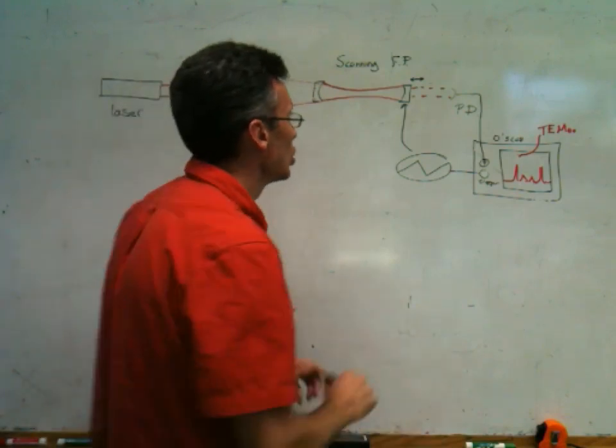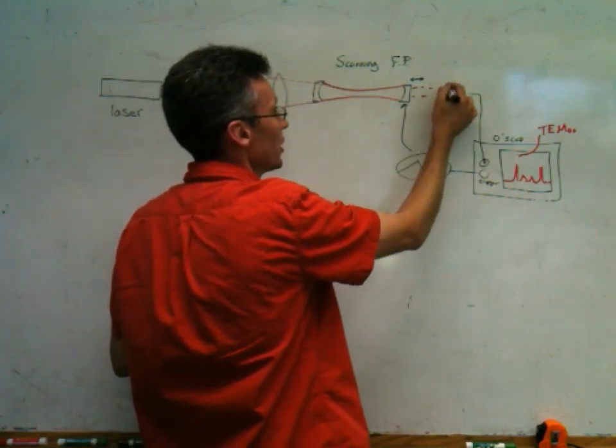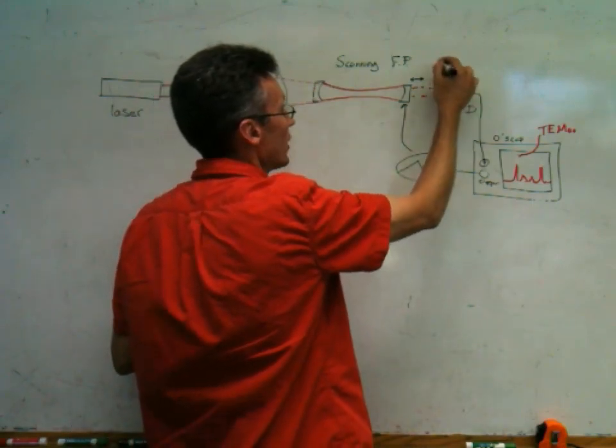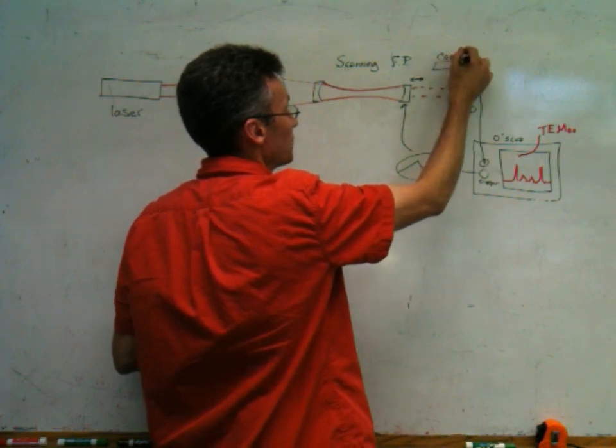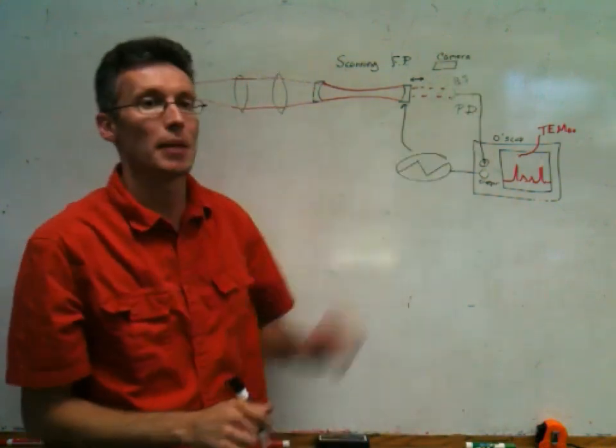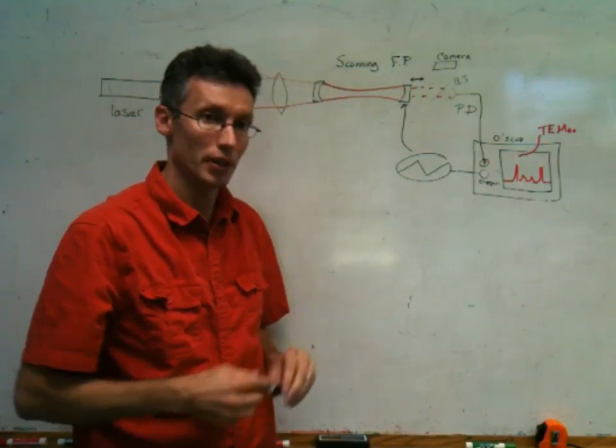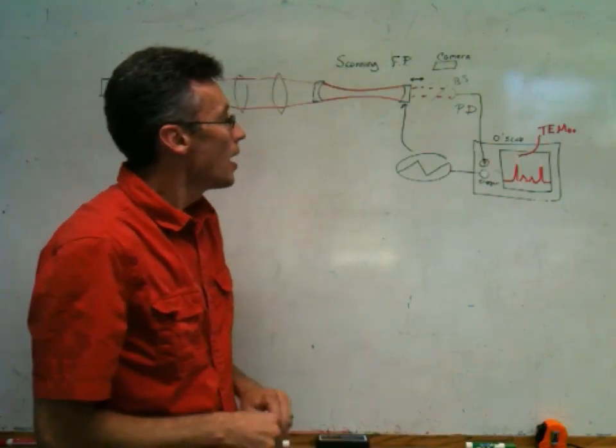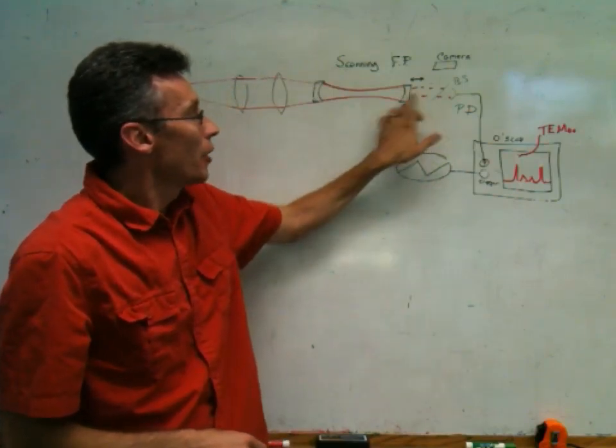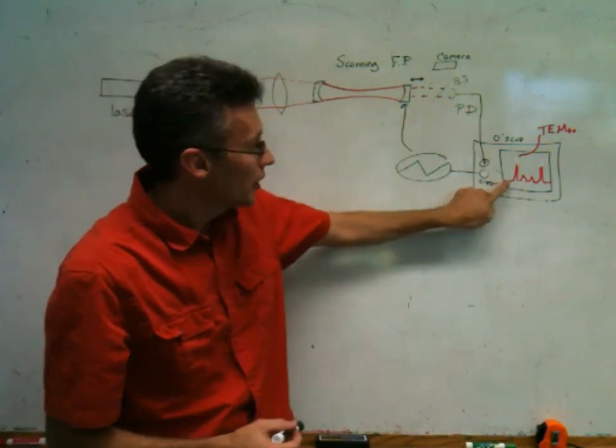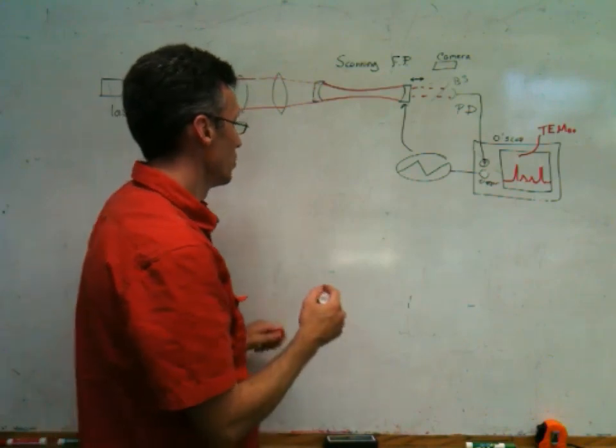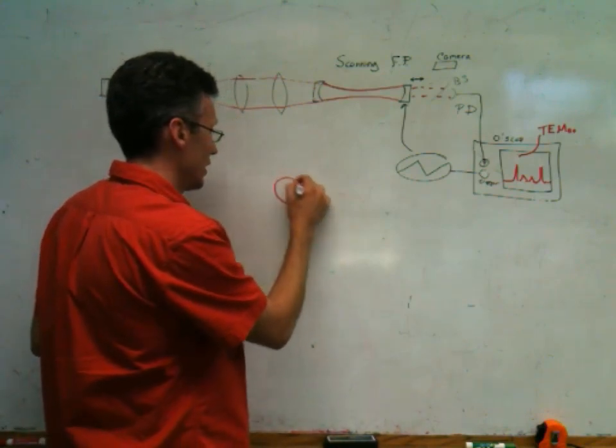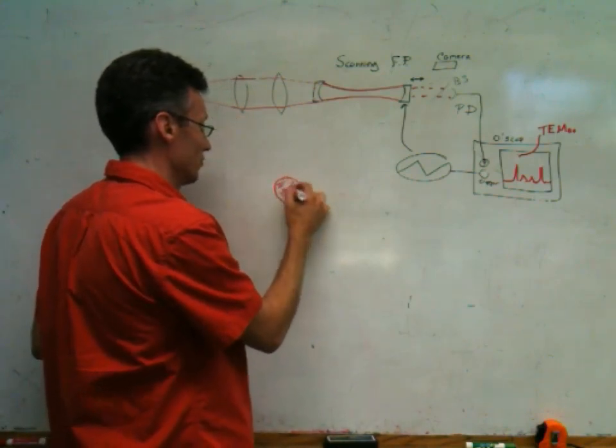You can also look at the light here. You can either put in a beam splitter and a camera, or you may be able to stick a piece of paper in and observe visually if you're using visible light to look at the power that comes out as you scan. And each of these large peaks should be a zero-zero mode. That is to say, you should see an intensity profile that looks circular.